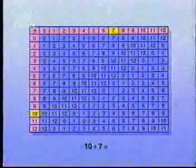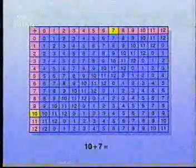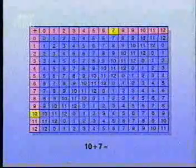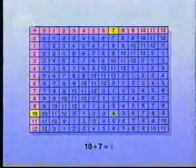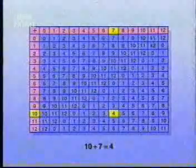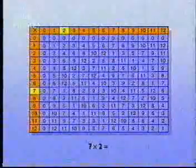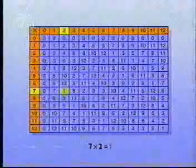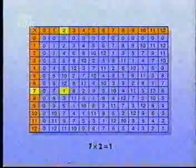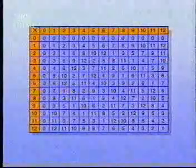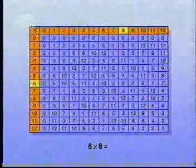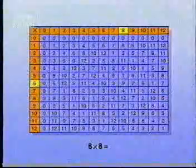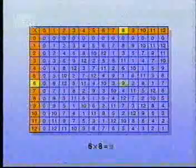10 plus 7 normally gives 17, but the remainder on dividing by 13 is 4. We do the same for multiplication. 7 times 2 is 14, but the remainder on dividing by 13 is 1. 6 times 8 is 48, but the remainder on dividing by 13 is 9.